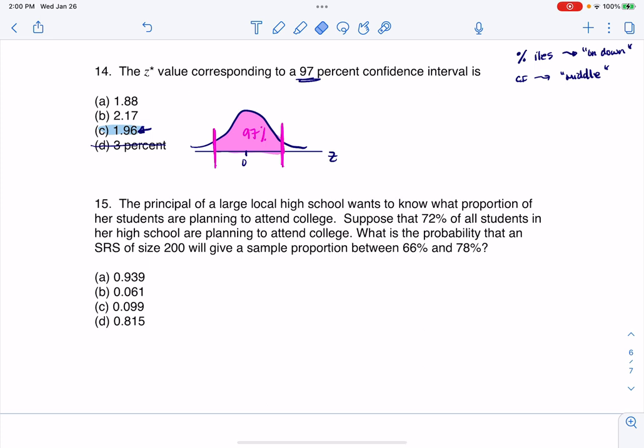So let's try and rationalize this out. If this graph represents the middle 97%, it means there's 3% collectively between the tails. But that means there's 1.5% here, and then there's 1.5% here because of symmetry.